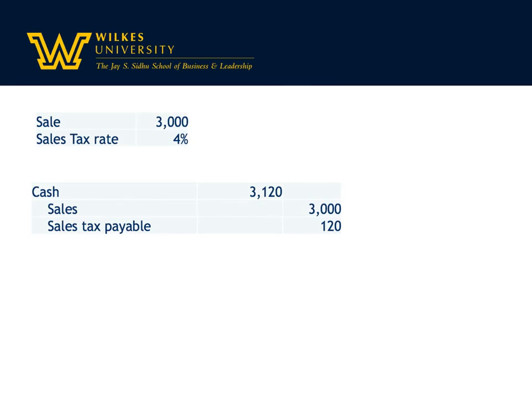If the sales are $3,000 and the tax rate is 4%, then $3,000 times 4% is $120. That's going to be your tax. So as a company, you're going to collect $3,120. But only $3,000 belongs to the company, so that's the credit to sales. The other credit is to sales tax payable for $120.